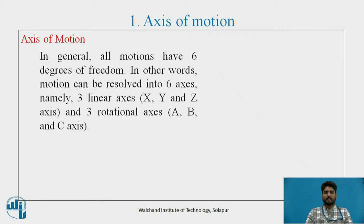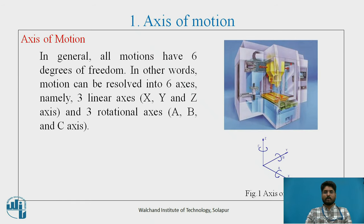First, axis of motion. In general, all motions have 6 degrees of freedom. In other words, motions can be resolved into 6 axes, namely 3 linear axes — X, Y, Z — and 3 rotational axes — A, B, and C. These are shown in figure 1.